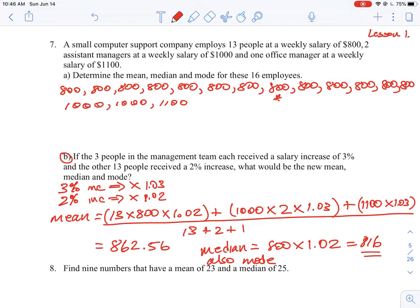So 3% is, for example, 1.03, and then work out the new total on top divided by the bottom, and that should give us our new mean for this problem set. All right.